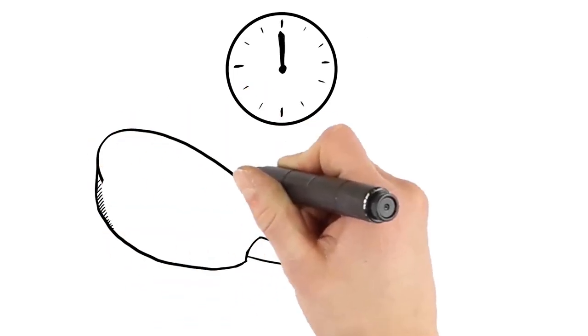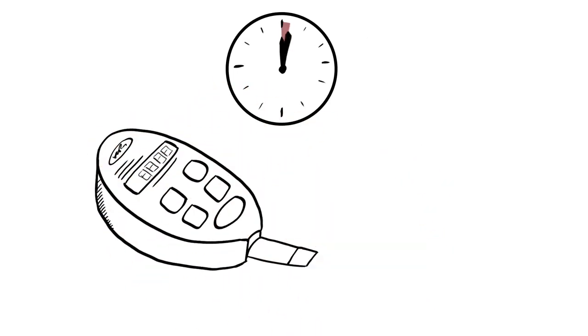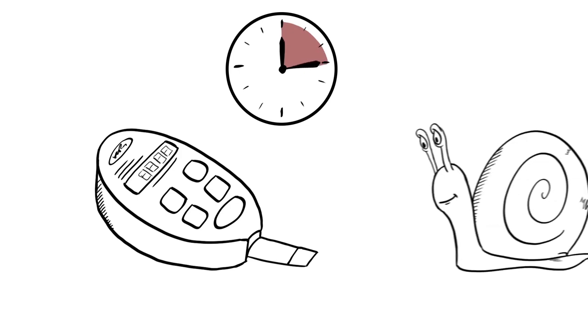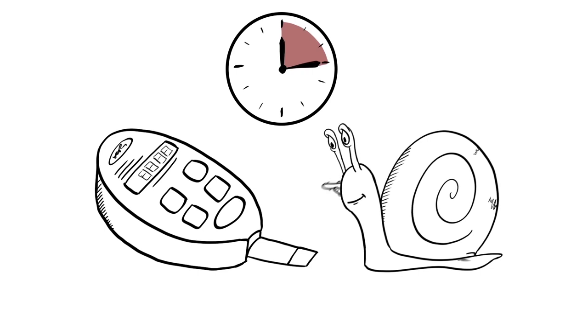Lastly, the finger stick check should always be repeated 15 minutes later to ensure that the value has increased to above 70. If not, another 15 grams of sugar should be consumed until the level improves.